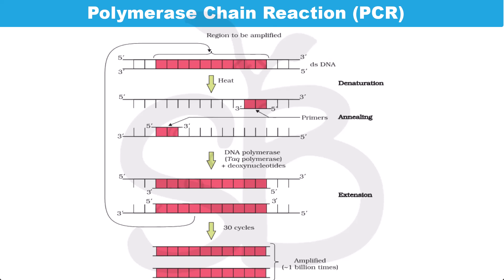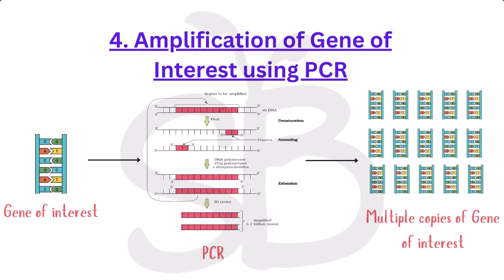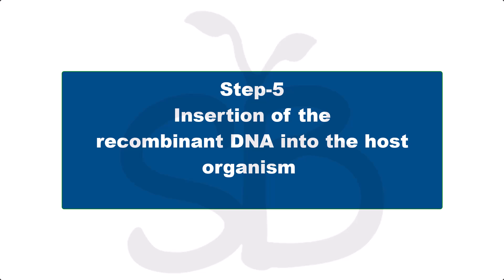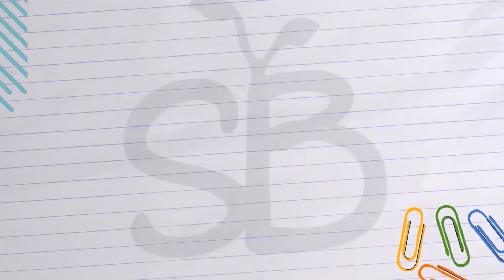In this polymerase chain reaction, we start with a single template DNA and are able to produce the desired DNA in large quantities. This amplified DNA can then be inserted into a cloning vector, which we will discuss in the next video. The next step is the insertion of recombinant DNA into a host cell or organism.